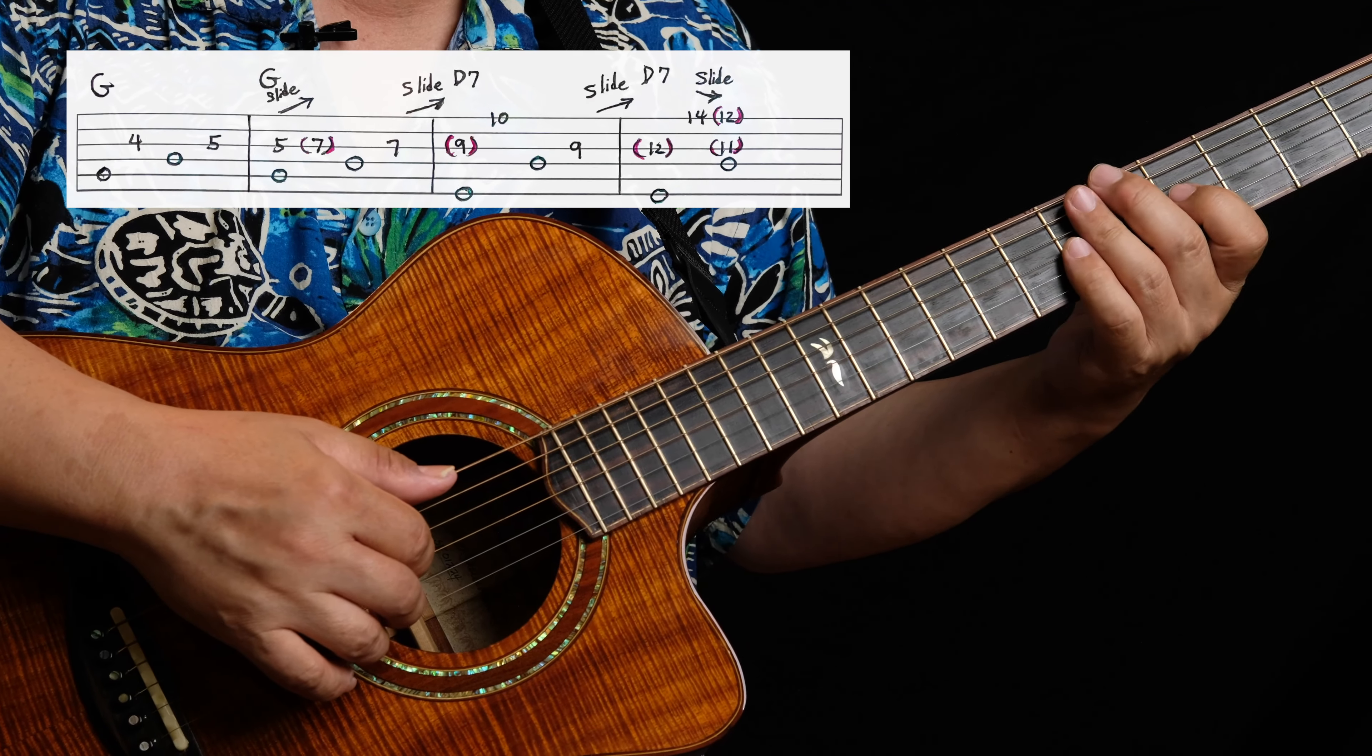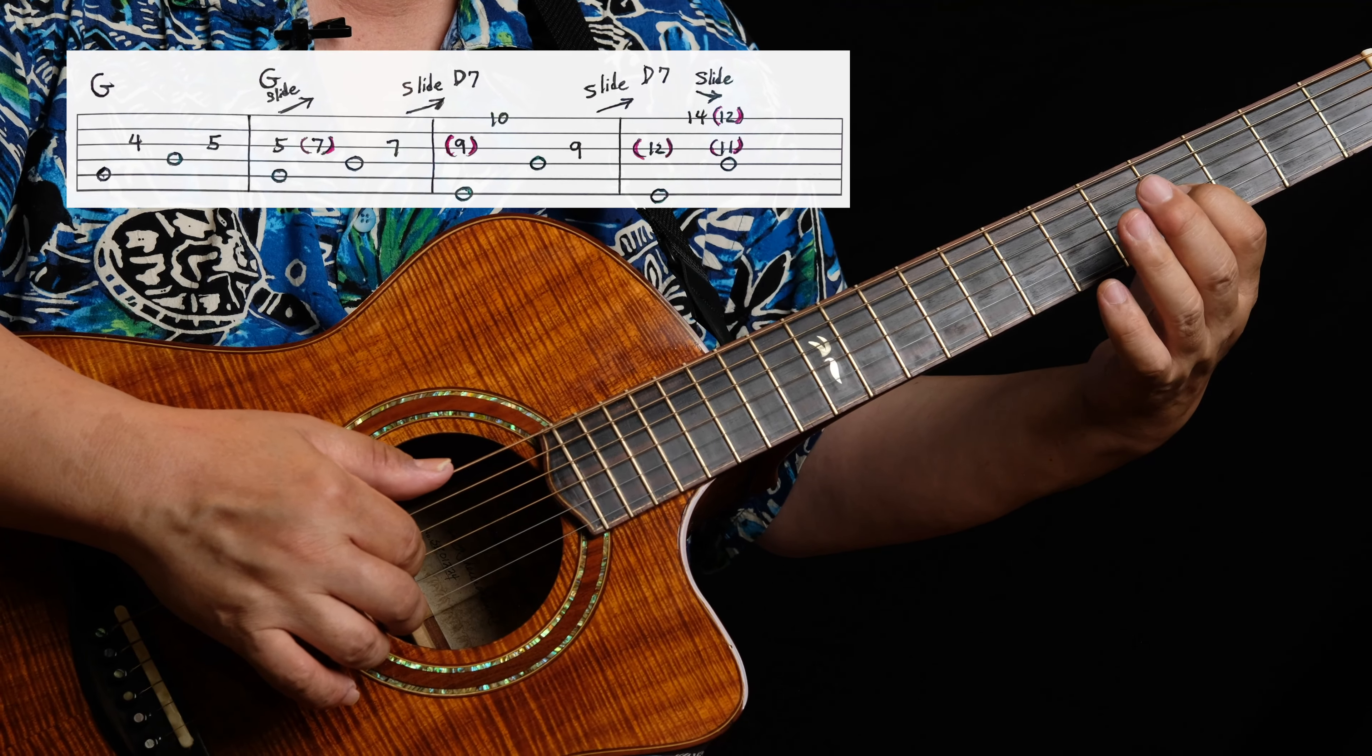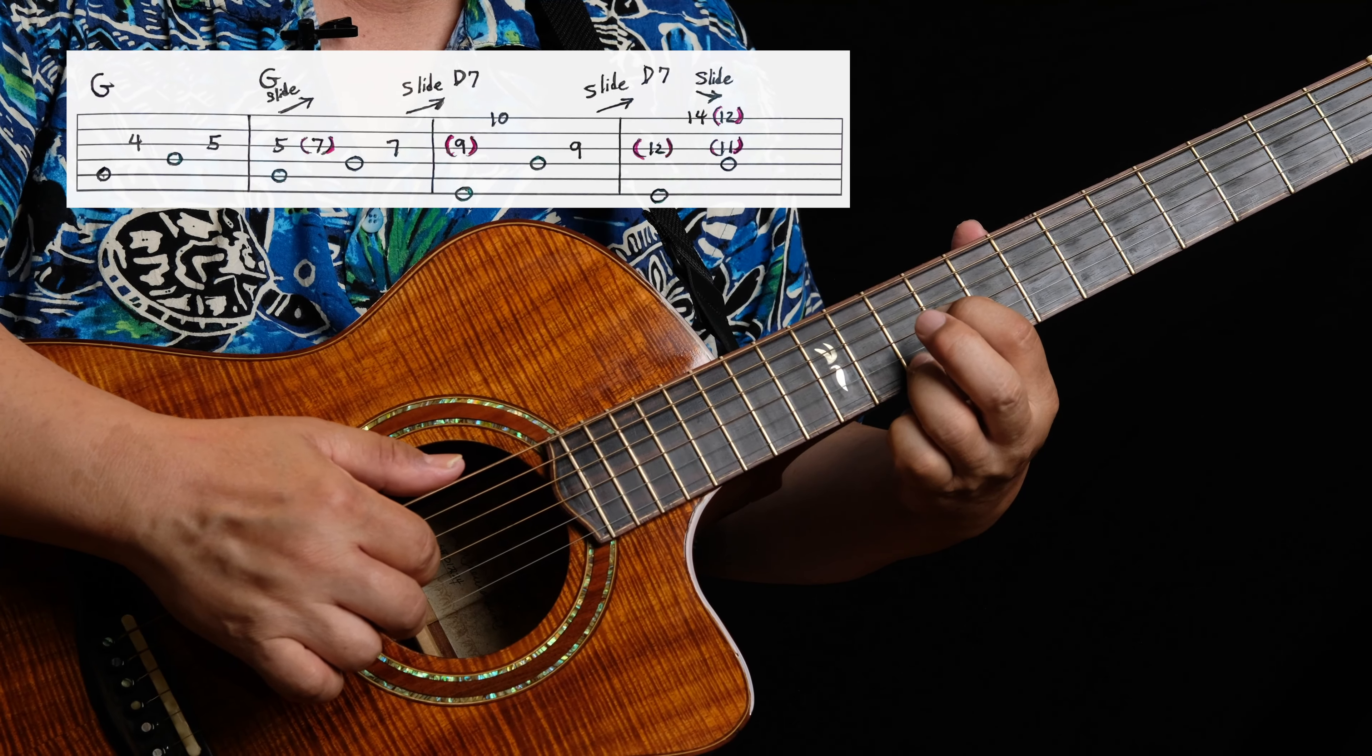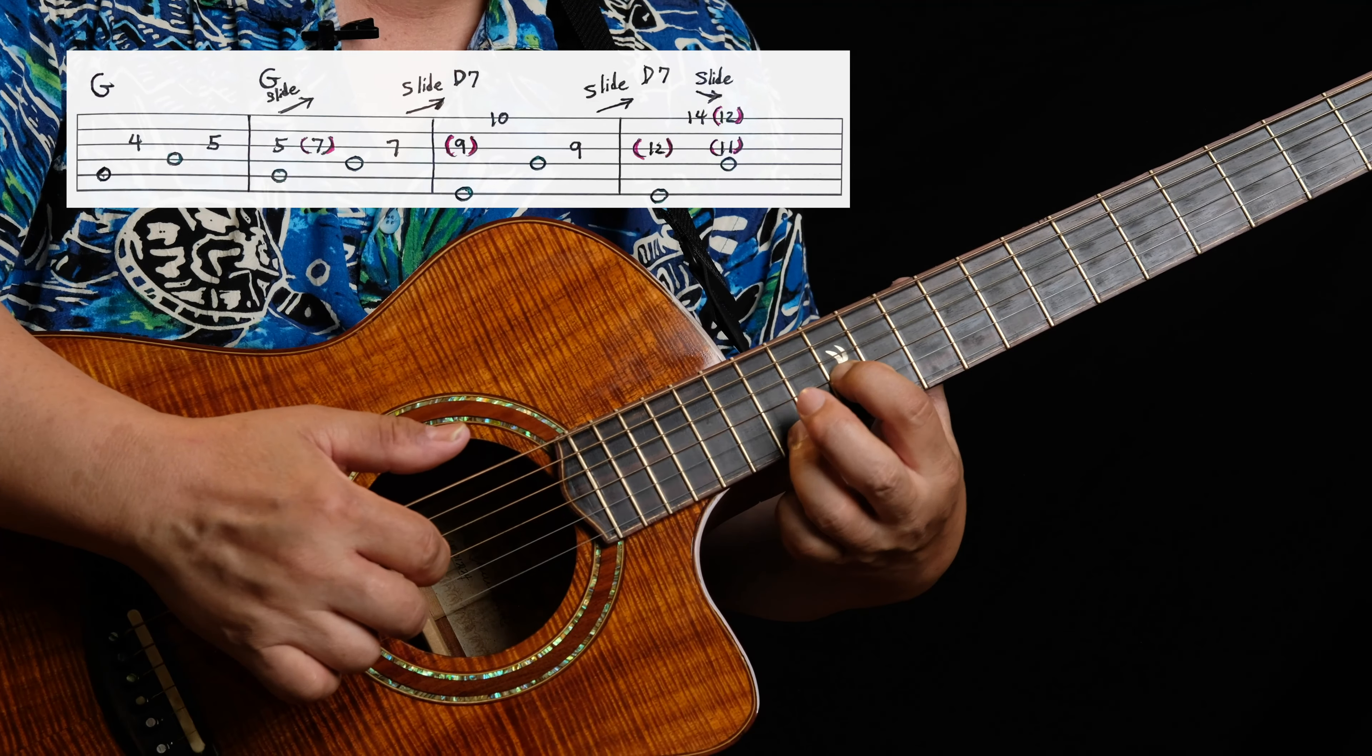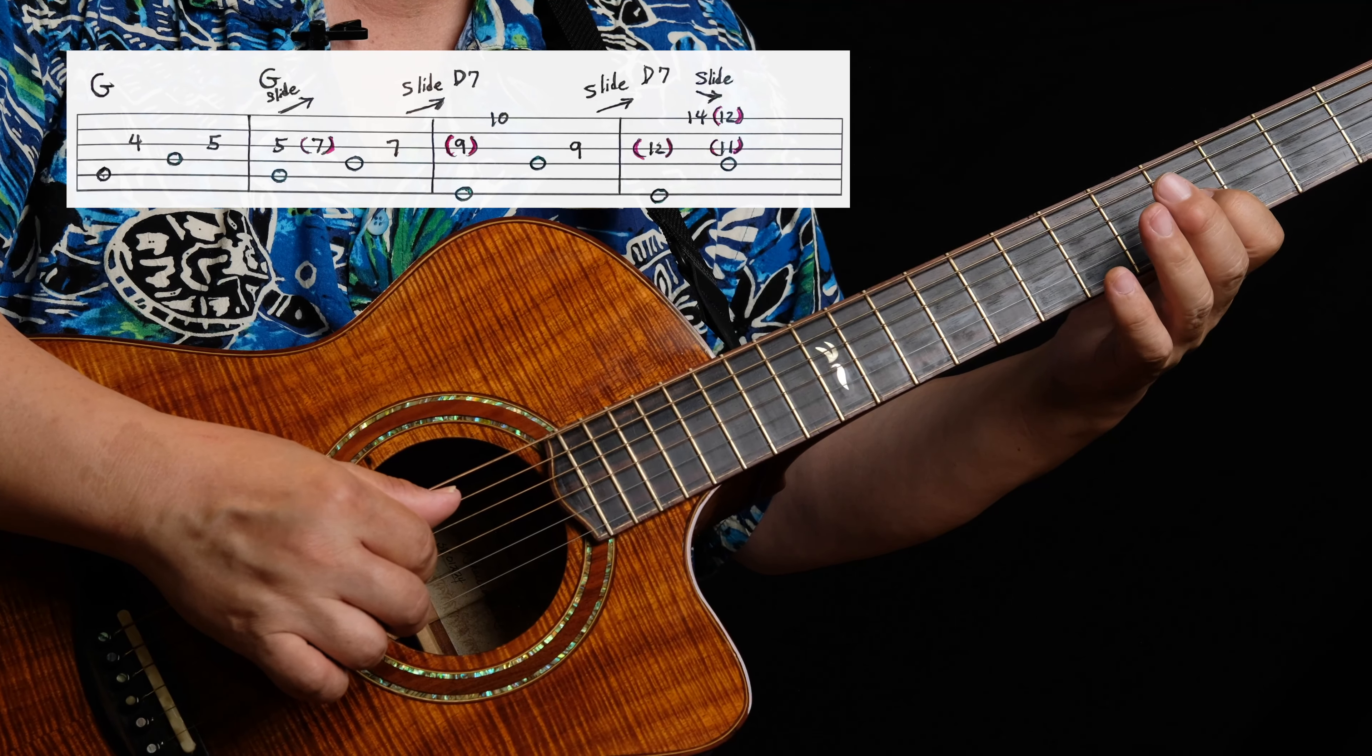Because the tricky part with the slack key stuff is all this sliding. Like there, and then you slide up. Notice the nine is in parentheses means you're not re-picking it, it's still ringing. And then from this nine you slide it to 12, you pick the 14, and then both slide down. So really slow it's like this.